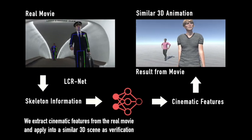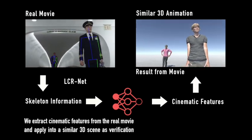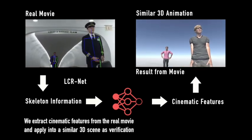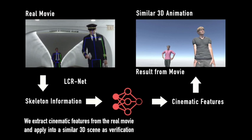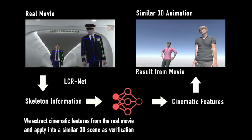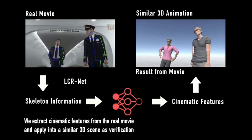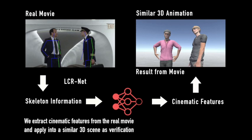Naturally, if the 3D character layout is significantly different from the real sequence, the camera motion would be different. Hence, we need to learn to which character layout some camera motions should be applied.